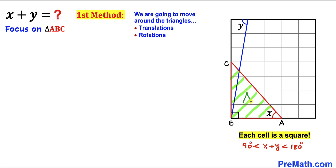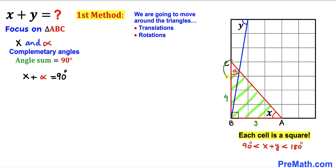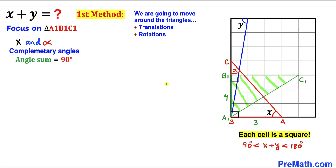Let's focus on right triangle ABC, where side length AB is 3 units and side length BC is 4 units. Let's assume that angle x and angle alpha are complementary angles — in other words, angle x plus alpha must equal 90 degrees. In our triangle, this angle is x, this is our 90-degree angle, and we label the remaining angle as alpha.